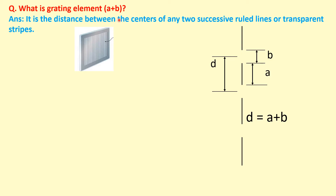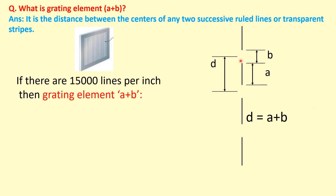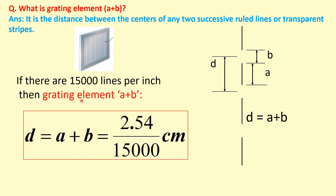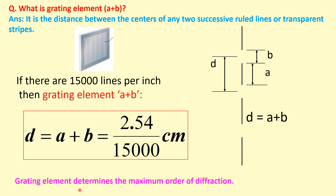What is the grating element (a + b)? It is the distance between the centers of two successive ruled lines or transparent strips. If the transparent opening is b and the opaque part is a, then (a + b) is the grating element. For 15,000 lines per inch, the grating element d = (a + b) = 2.54 / 15,000 cm. This grating element determines the maximum order of diffraction.